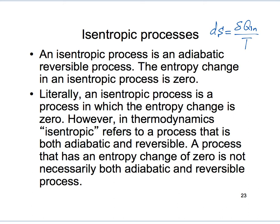It's possible that you may have an irreversible process where the system's entropy change is zero — even if the system undergoes an irreversible process. For example, think of a system that undergoes a series of irreversible processes, completes a cycle, and returns to its original state. In that case, the entropy change is zero, but we don't call that an isentropic process because the process is not reversible.